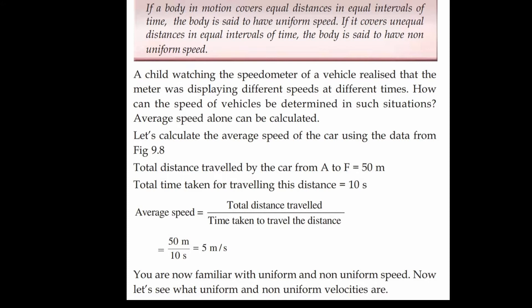A child watching the speedometer of a vehicle realizes the meter was displaying different speeds at different times. How can the speed of the vehicle be determined in such a situation? Let us calculate the average speed of the car using the data from the figure. Total distance travelled from A to F is 50 meters, total time taken is 10 seconds. So average speed equals total distance divided by time taken = 50 divided by 10 = 5 meters per second.